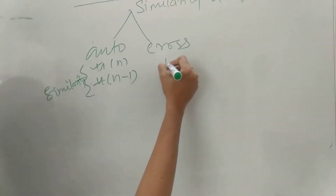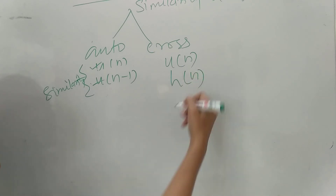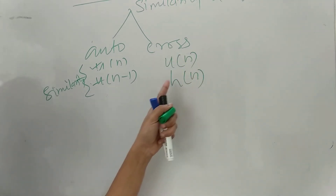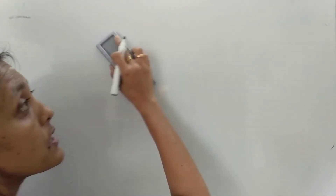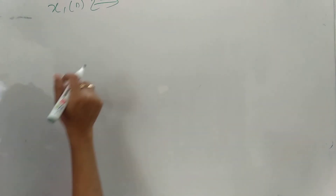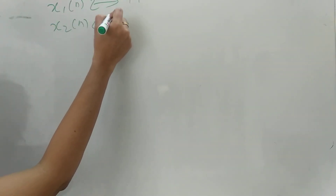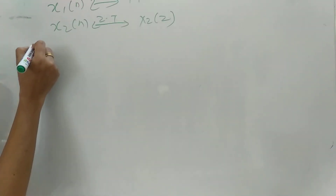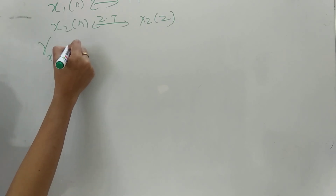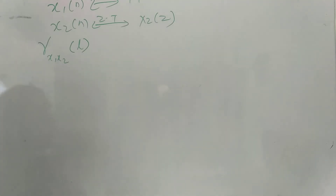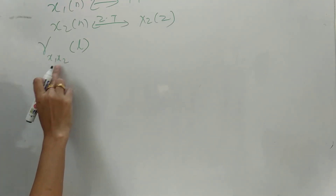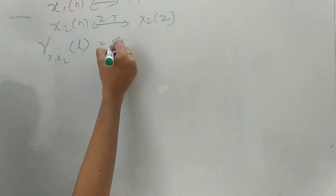Cross-correlation is the similarity between two different signals. The correlation property states that if X1 of N has Z transform X1 of Z, and X2 of N has Z transform X2 of Z, then the correlation R_X1X2 of N is defined as the sum from minus infinity to plus infinity of X1(N) times X2(N minus L).